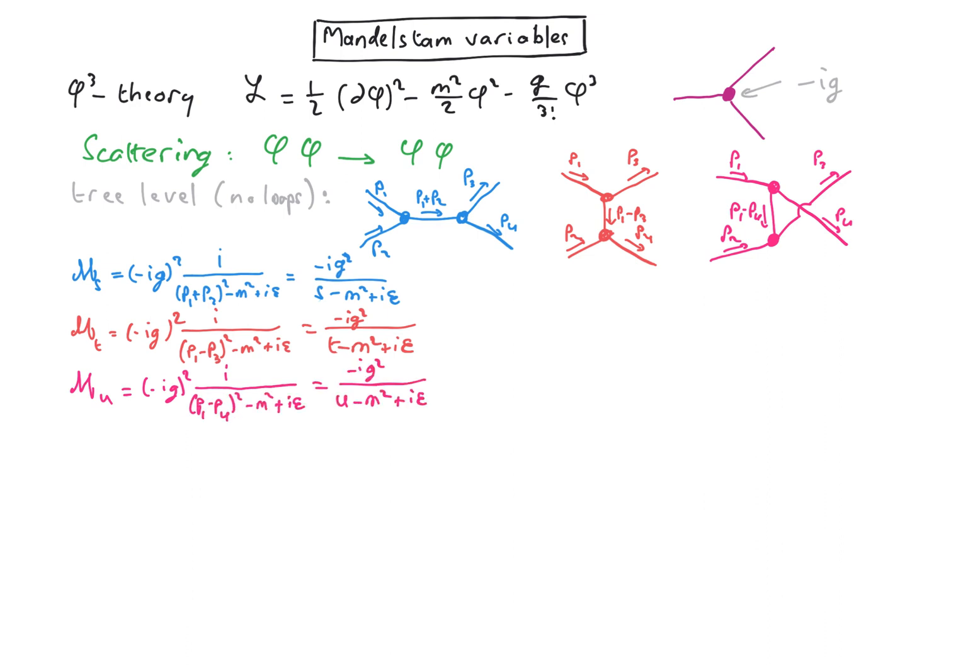Here I have introduced the Mandelstam variables s, t, and u. These variables are often used in calculations of scattering of two particles or in the decay of one particle into three particles.